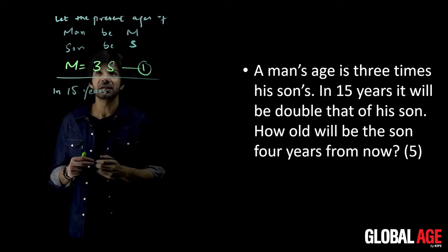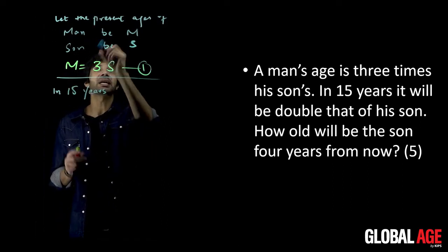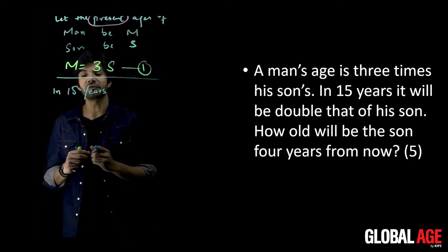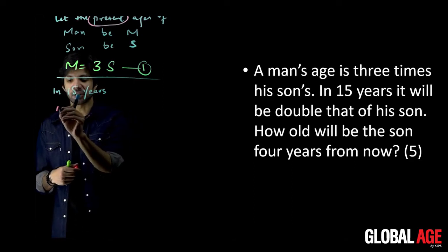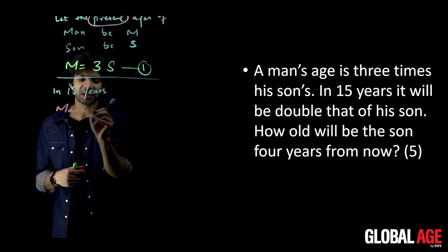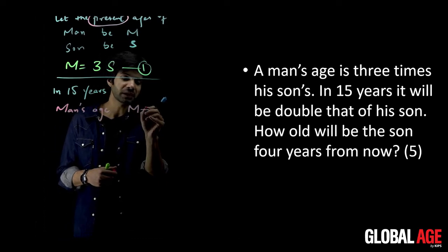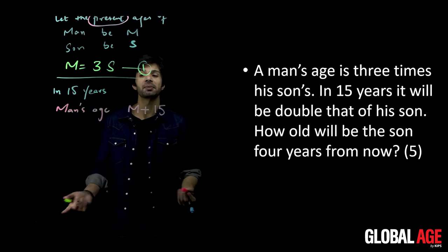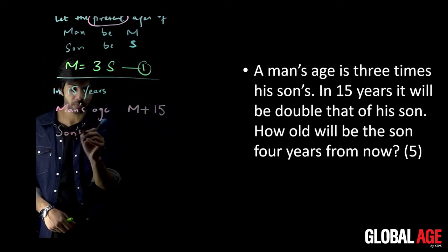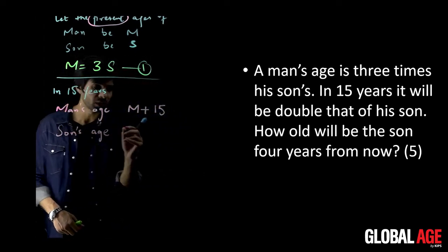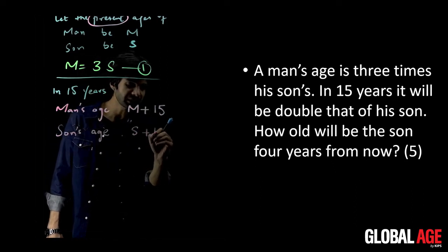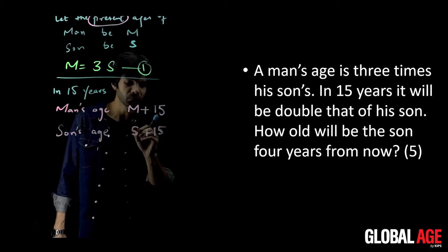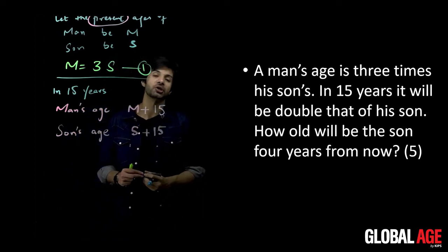Okay, after 15 years, if the present age of man is M, then in 15 years, man's age will be M plus 15. Whatever is his present age, it will be 15 added simply. Similarly, son's age will be S plus 15 simply. If the present age is M and son's age S, then the two will be 15 added.